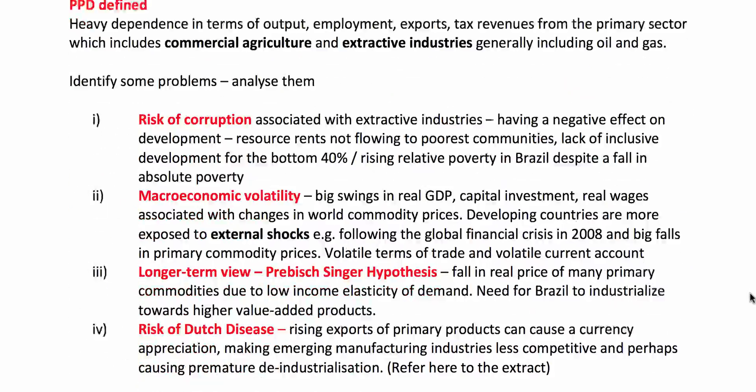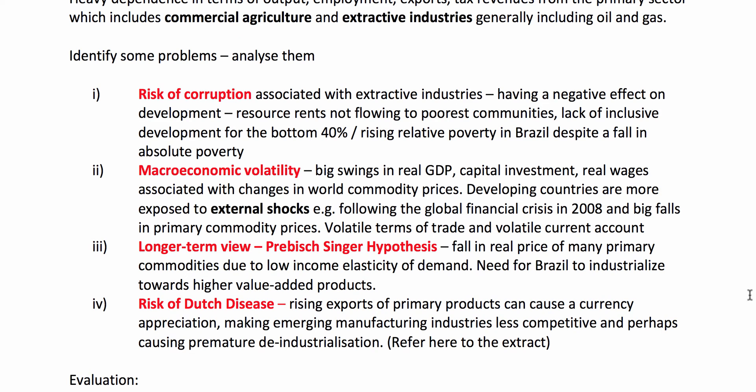Here are some of the potential problems. Things like the risk of corruption associated with extractive industries, resource rents not flowing to the poorest communities, and rising inequality — extract one talks about the Gini coefficient in Brazil being 0.51. Macro volatility: countries that are heavily primary product dependent tend to be more vulnerable to external shocks and volatile terms of trade. You could take a long-term view and talk about the Prebisch-Singer hypothesis, which suggests a fall in the real price of many primary commodities over time, although that's been questioned in recent years. You could also mention the risk of Dutch disease, where a country exporting vast amounts of valuable primary commodities can see their exchange rate appreciate, causing de-industrialisation in their emerging manufacturing sectors.